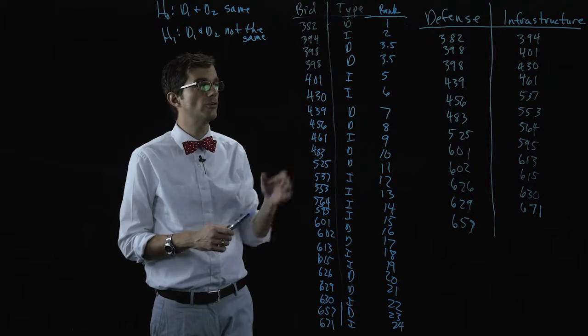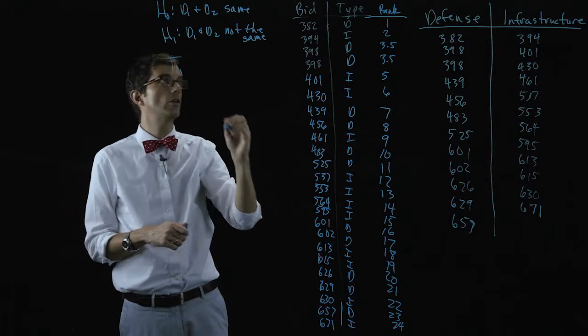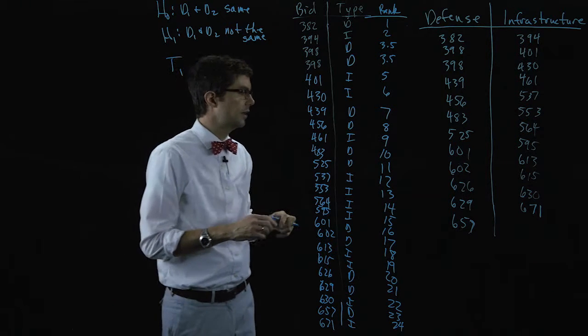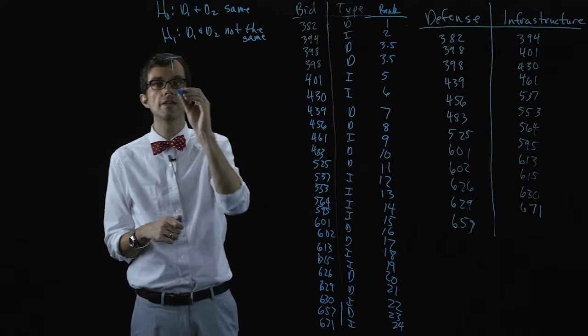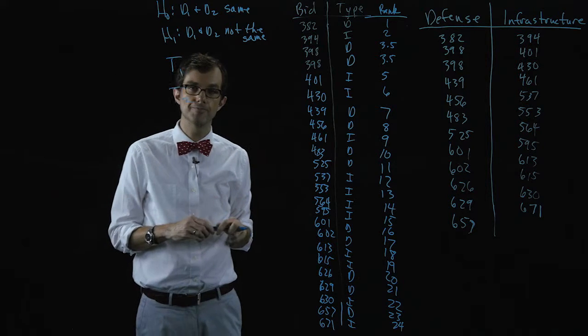So what we want to do is find the rank sum, t-one and t-two. Let's call t-one, we'll call that defense, and we'll call t-two infrastructure.